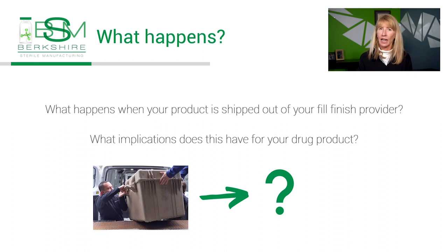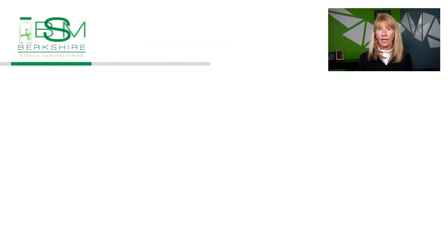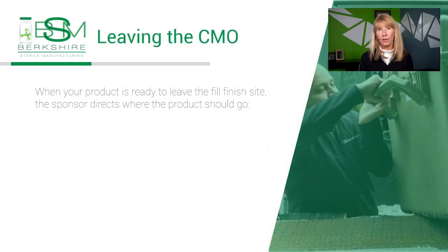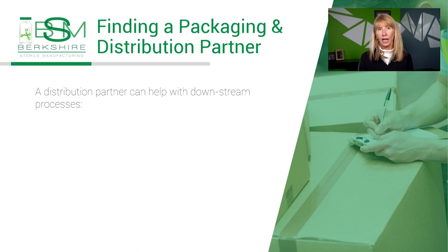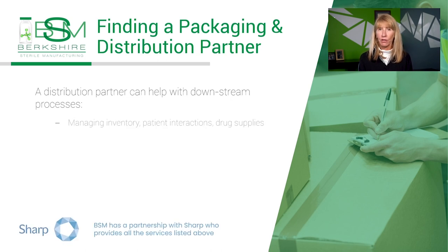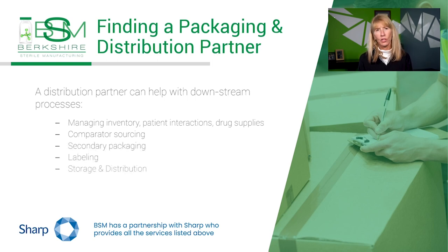A packaging and distribution partner such as Sharp can help with managing inventory, patient interaction and drug supplies, comparator sourcing, secondary packaging, labeling, and storage and distribution. Nearly two-thirds of clinical trials use comparators and co-therapies, and a big challenge for many sponsors is sourcing these therapies. A packaging and distribution partner can help develop a strategy that addresses all study needs, gathers the required documentation, overcomes regulatory challenges, and anticipates expiry dates and lead times to keep your study supplied.